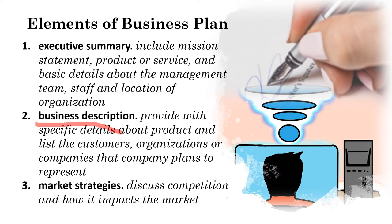Business descriptions are used to provide specific details about the product. You have to address the problems that your company tackles in detail, and you need to be precise and list the customers, organizations, or companies that the company plans to represent. The company will detail the goods and services it will deliver, which can include the pricing, the product lifespan, customer benefits, development and manufacturing methods, any patents the company may have, proprietary technologies, and information on research and development.